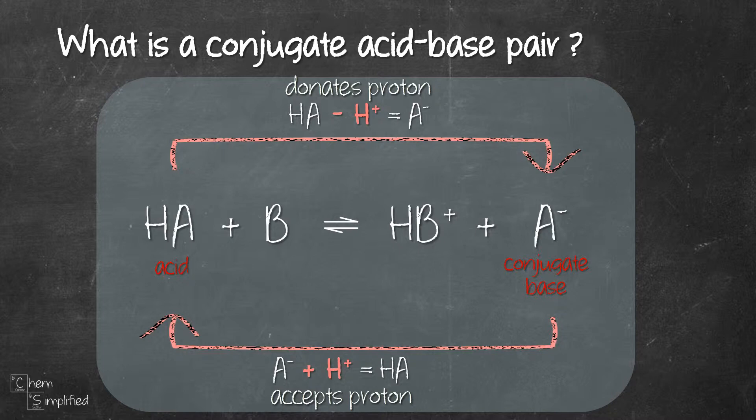The same explanation applies to base and its conjugate acid. B is a base because it accepts the proton from HA to become HB+. HB+ is the conjugate acid of B because it can donate proton to form back B.